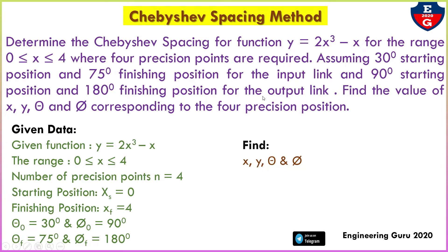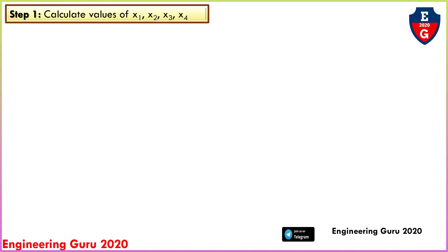Since 4 precision points are required, we have to find theta 1, theta 2, theta 3, theta 4, and similarly phi 1, phi 2, phi 3, phi 4. Now let's see the steps one by one. I will provide an easy method so you can understand and easily solve. First step: calculate the value of x1, x2, x3, and x4, which depend on the number of precision points n equal to 4.